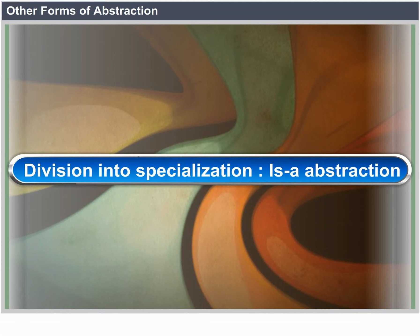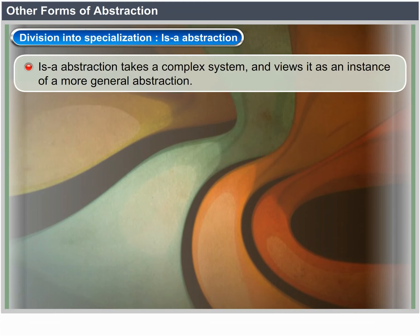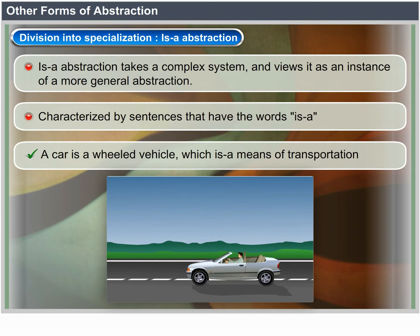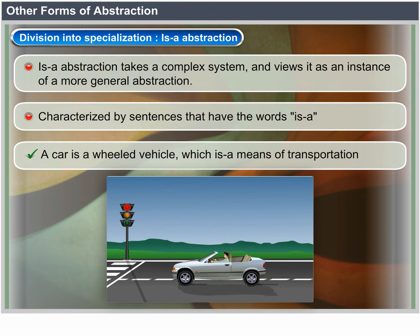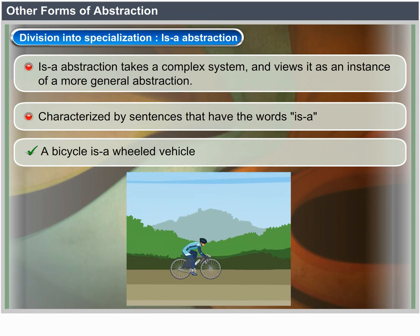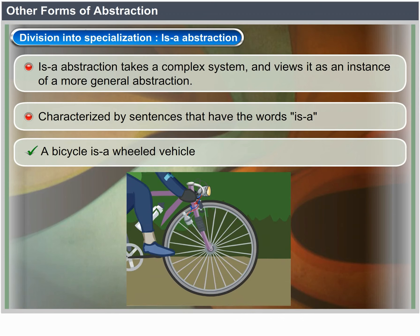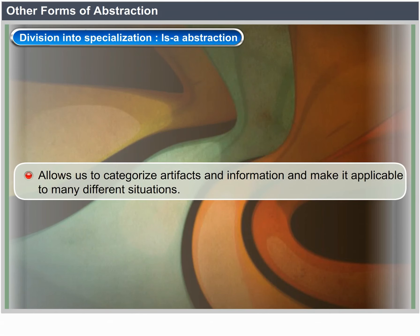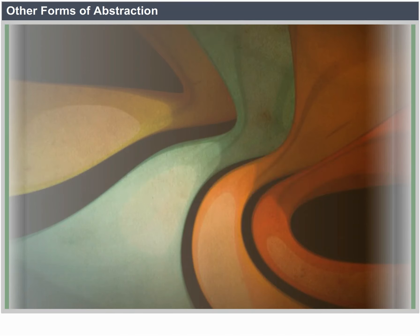Division into specialization is an 'is a' abstraction. It takes a complex system and views it as an instance of a more general abstraction, characterized by sentences using 'is a': a car is a wheeled vehicle, which is a means of transportation; a bicycle is a wheeled vehicle; a pack horse is a means of transportation. This allows us to categorize artifacts and information and make it applicable to many different situations.